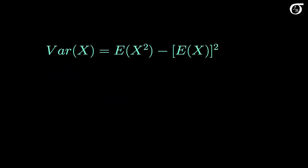We're also going to need this handy relationship: the variance of a random variable is equal to the expectation of the square of the random variable minus the square of the expectation. This is a relationship we've looked at previously and it is useful in calculations as well as theoretical work.